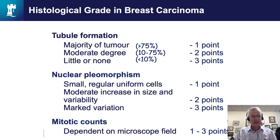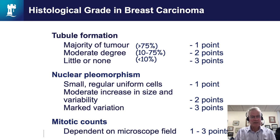The way we assess histological grade is to look at three components: tubule formation, that is how well the tumor is forming glands and tubular structures; nuclear pleomorphism, that is how large or how varied in size the nuclei of the tumor are; and mitotic frequency, which is looking at the number of mitotic figures one can identify in an area of the tumor.